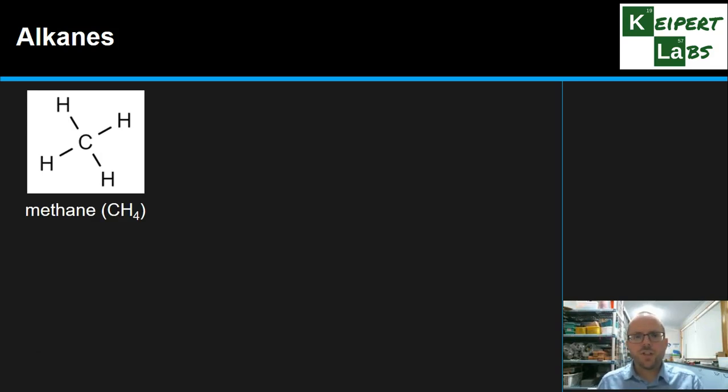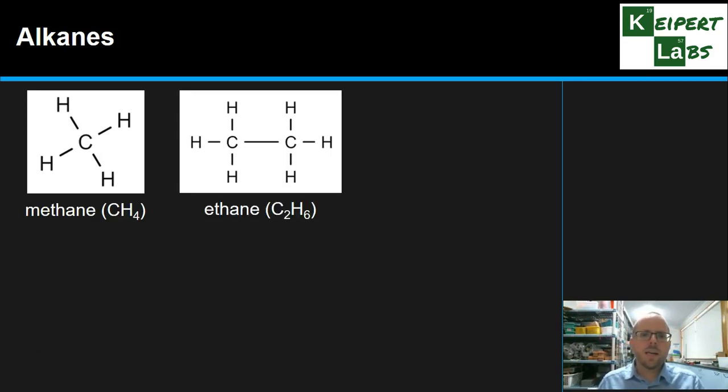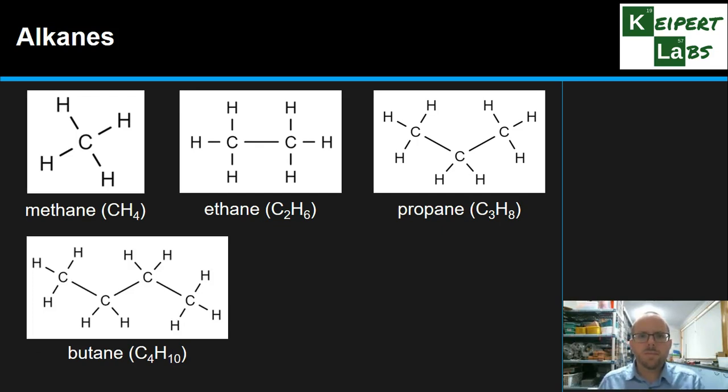So I'm just going to show you some examples here. We've got methane, ethane, propane, and butane. You notice that we're adding extra carbon atoms and these collections of carbon atoms and hydrogens as we've gone through these. We've gone from one to two to three to four. And then this is the molecular formula that goes with them: CH4, C2H6, and so on.